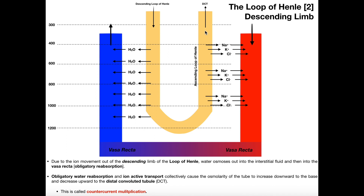Remember that these ions move from the limb initially into the interstitial regions before going into the blood. And that creates this high osmotic pressure, or osmotic gradient, of these ions in the interstitial regions. Because we have a high osmotic pressure here due to these ions, that drives water reabsorption from the descending limb. And water reabsorption only occurs in the descending limb.